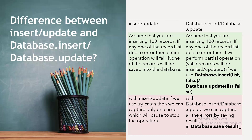Additionally, with regular insert and update using a try-catch block, you can capture only one error — the one that caused the operation to stop. With Database.insert and Database.update, you can capture all errors by using the Database.SaveResult object, which stores all error details from the operation.